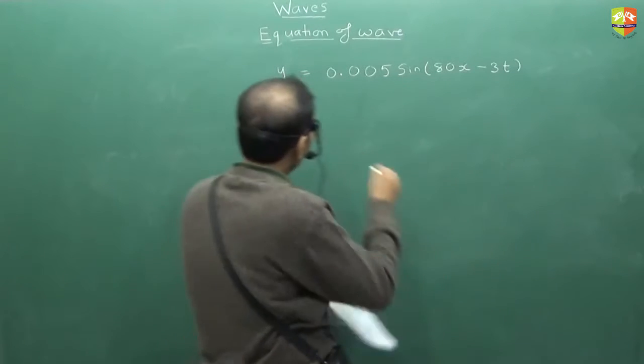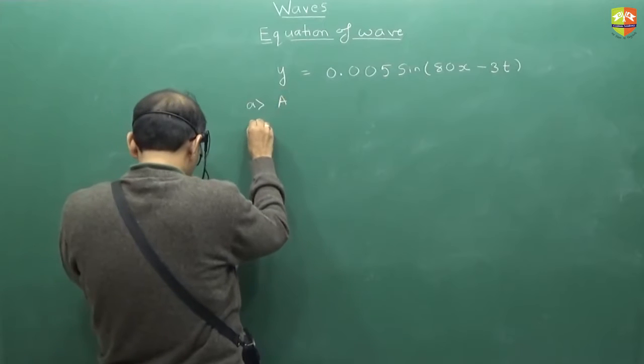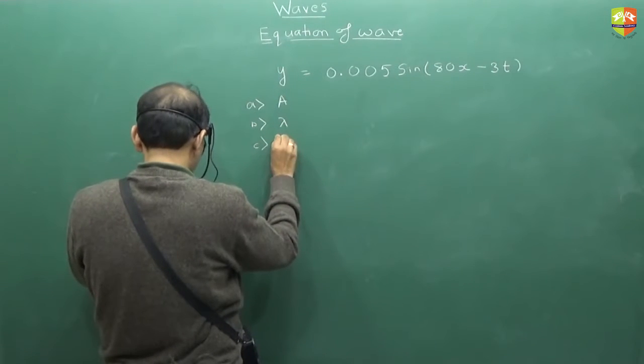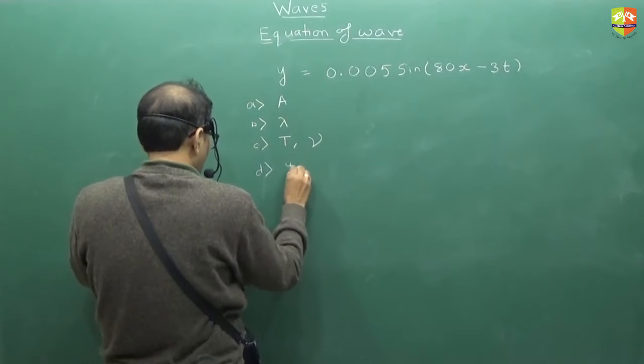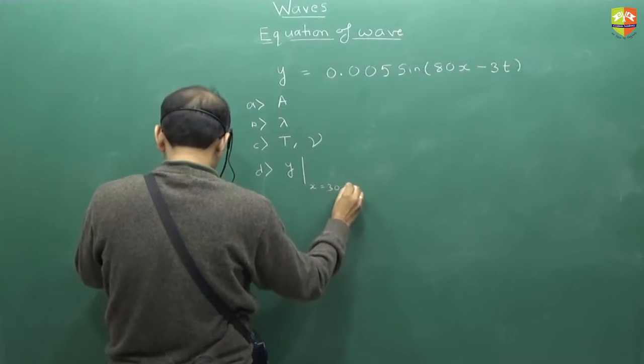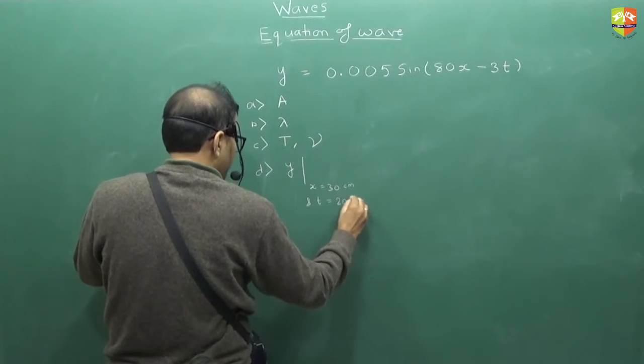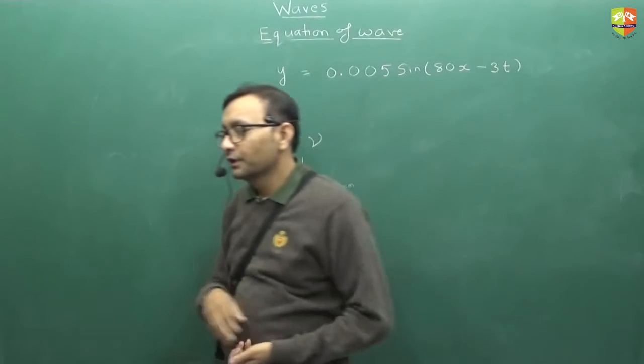You need to calculate these things: amplitude, wavelength, time period and frequency. You need to calculate displacement at x equal to 30 cm and t equal to 20 seconds. Solve it. Straightforward numerical, you must be getting it right.